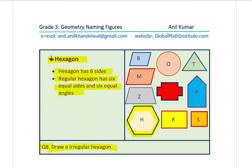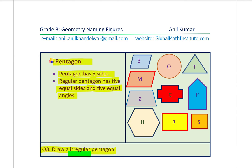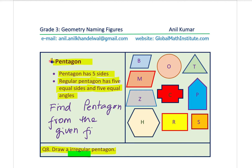An irregular hexagon means it has different sides. Also, from the previous video, can you find a pentagon from the given figures? There is one pentagon among the figures shown.